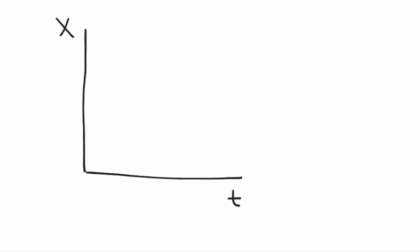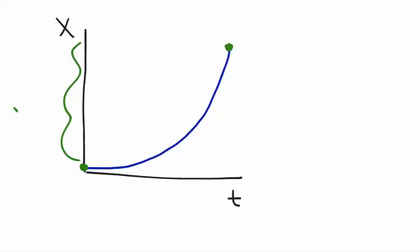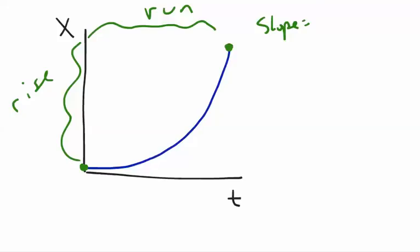If we have a position-time graph, remember the slope of a position-time graph is the velocity. So if the velocity is changing, that means the slope is changing. One example would be a curvy graph. Because it's curvy, that tells us the slope is not constant. To find the slope of a curve, if we pick the starting point and the ending point and do rise over run, the rise gives us our change in x, and the run gives us our change in time. Change in x is displacement, so displacement over time is what we call average velocity.